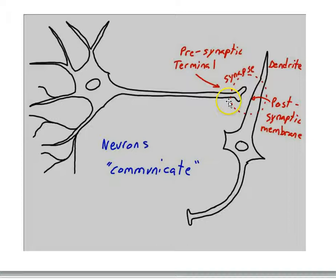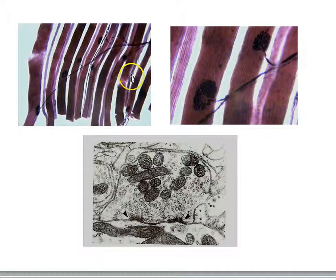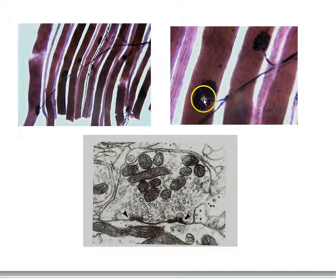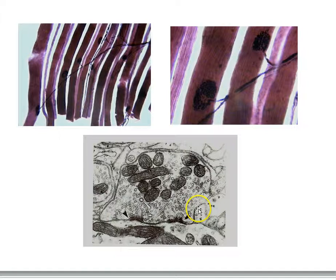Here we see a nerve fiber making contact with multiple muscle cells. The red strips are individual muscle cells, and the axon is branching into multiple terminals, each synapsing on a muscle cell. If we look with an electron microscope at a cross section of this synapse, we see the pre-synaptic terminal above and the post-synaptic cell below. Here is the membrane of the post-synaptic muscle cell and the terminal membrane just above it. The synaptic gap between the two is very, very tiny.